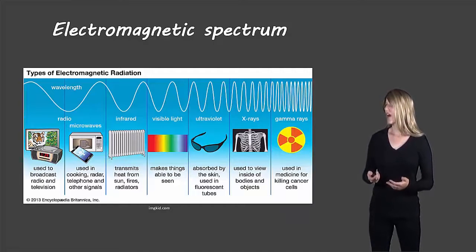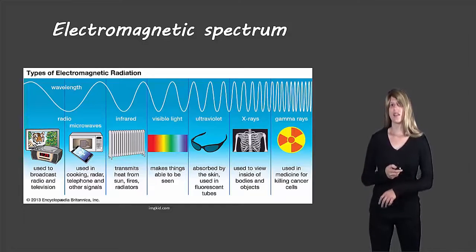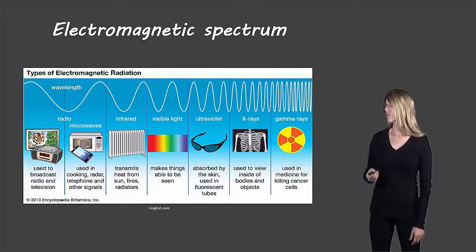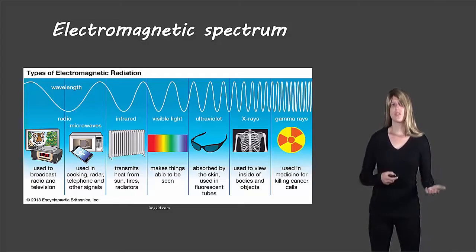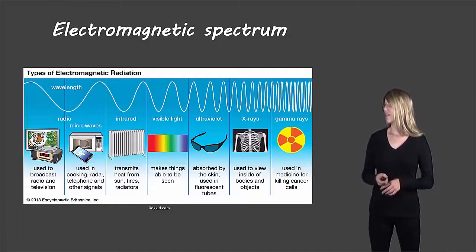We have ultraviolet light. So this is used in fluorescence tubes. It's also absorbed by the skin, so ultraviolet light or UV light is dangerous to our skin. It can cause cancer. There are x-rays, which we use to look inside of bodies. They're also produced in space. And then there's gamma radiation, which we use in medicine to help kill cancer cells.